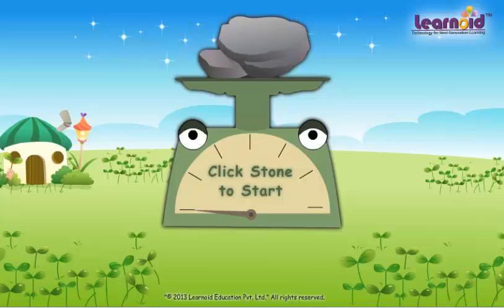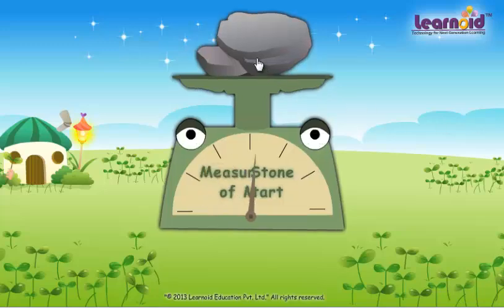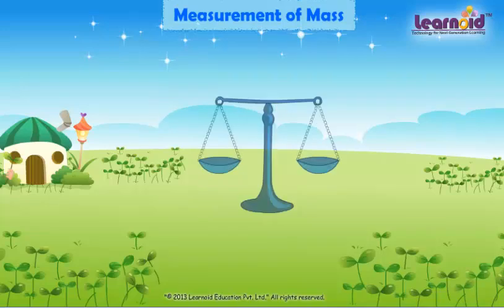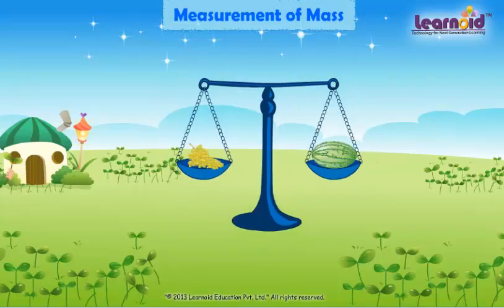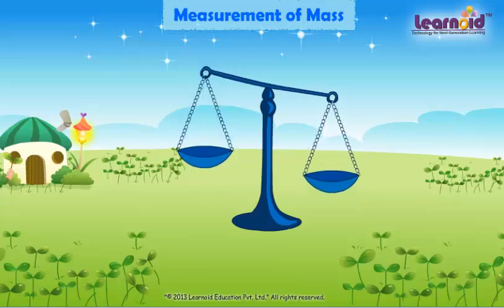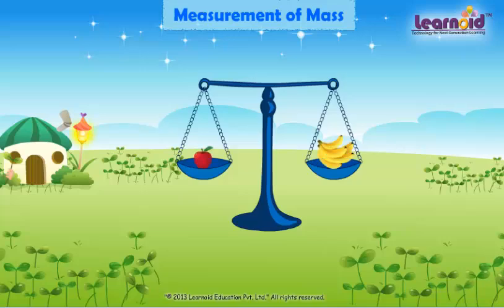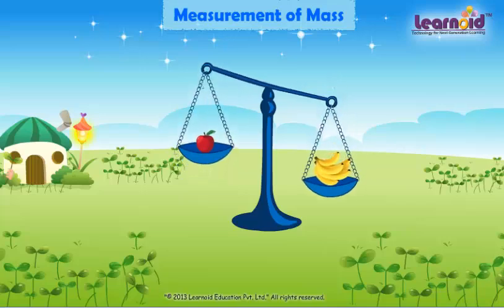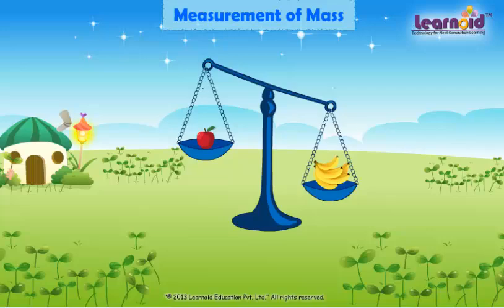Today we will learn measurement of mass. These grapes are light and this watermelon is heavy. One apple is light and six bananas are heavy. We use gram and kilogram to weigh things.